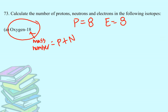But how do I figure out the number of neutrons? Well, if protons plus neutrons equals the mass number, then 18 minus 8 will give me the number of neutrons, which ends up being 10. So I have 10 neutrons.